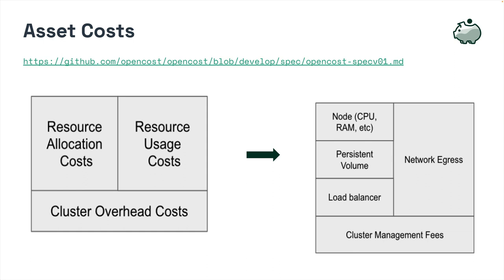The asset costs are the individual nodes and overhead that make up our Kubernetes cluster. Resource allocation and usage costs generally contain the node's CPU, RAM, operating system, and potentially GPUs as allocation costs. Persistent volumes are the associated file systems, and there may be load balancer and network egress costs as well. This is a simplification—each of these breaks down much further in the OpenCost specification.